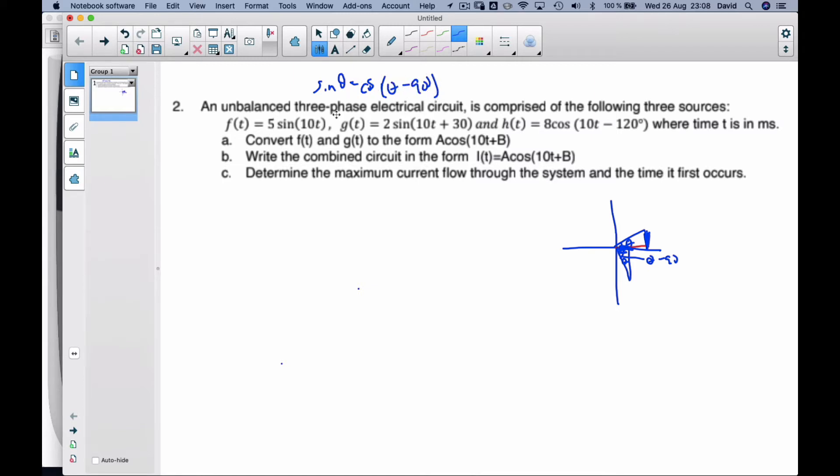I'm gonna use this identity to convert these. So f(t) is going to be 5 cosine(10t - 90) and g(t) will be 2 cosine(10t - 60).